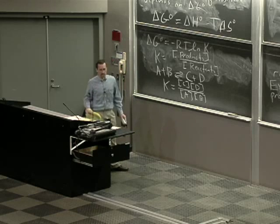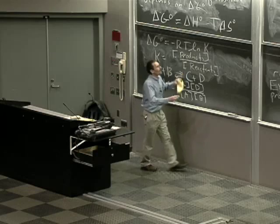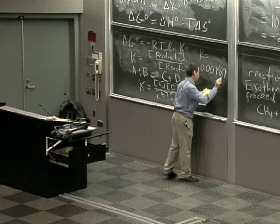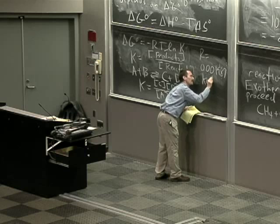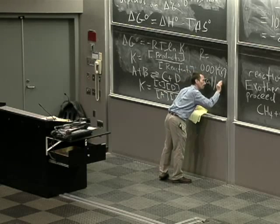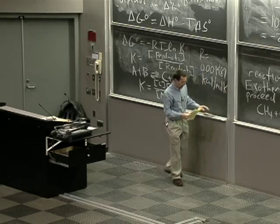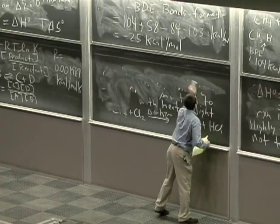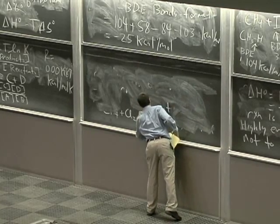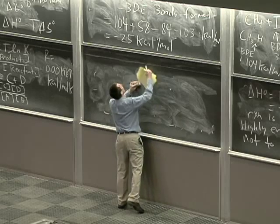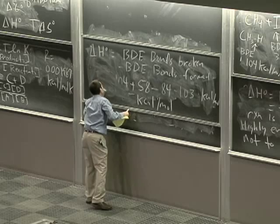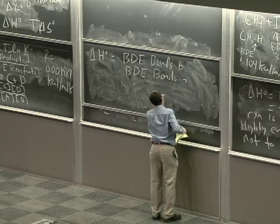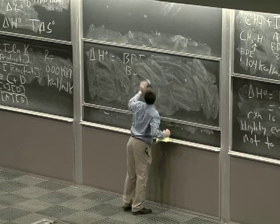R is the universal gas constant, equal to 0.001987 kilocalories per mole per Kelvin. Now, let's look at the implications and the useful magic number 1.36 kilocalories per mole.